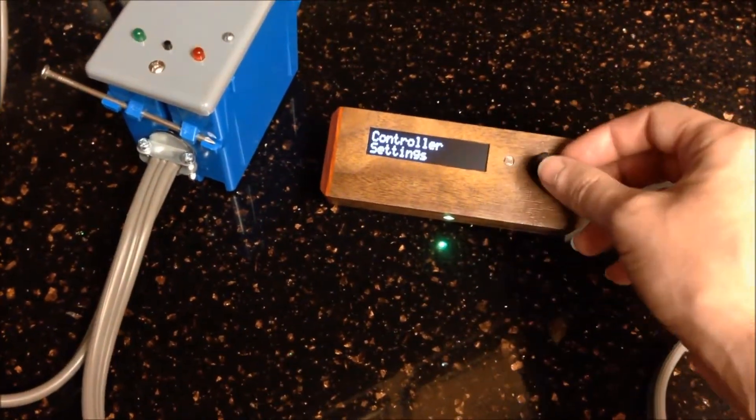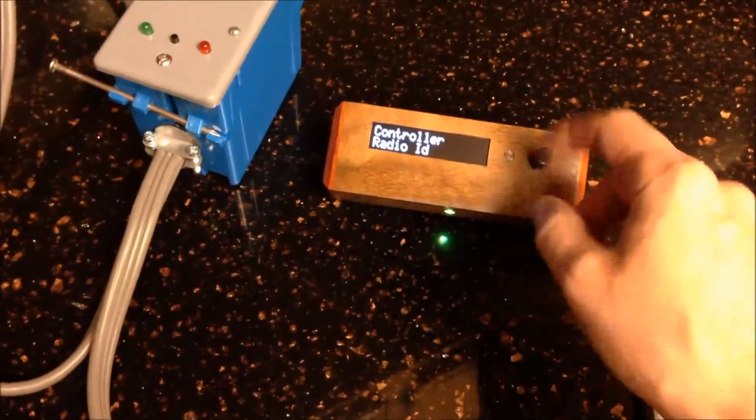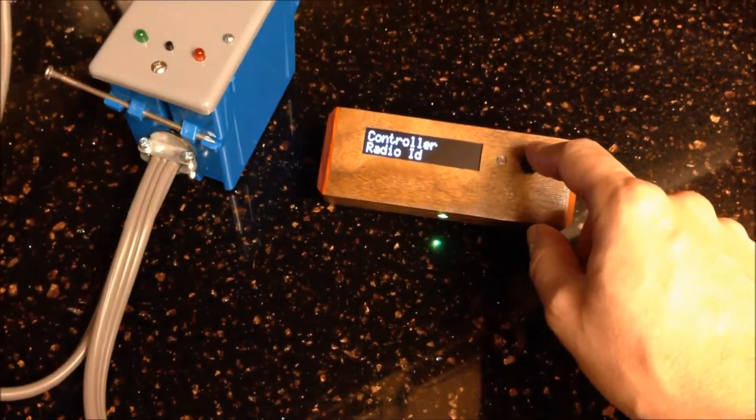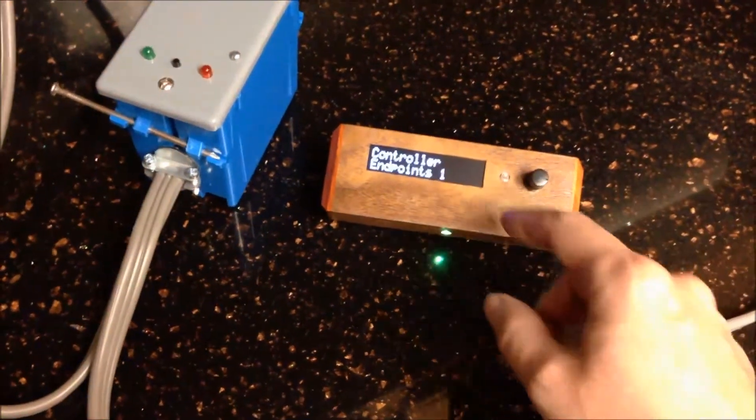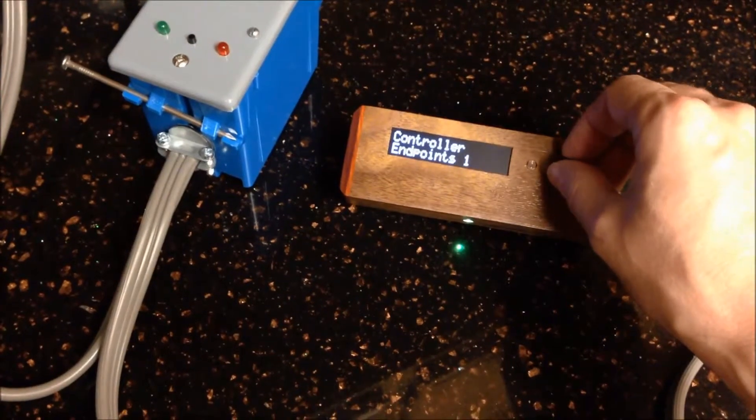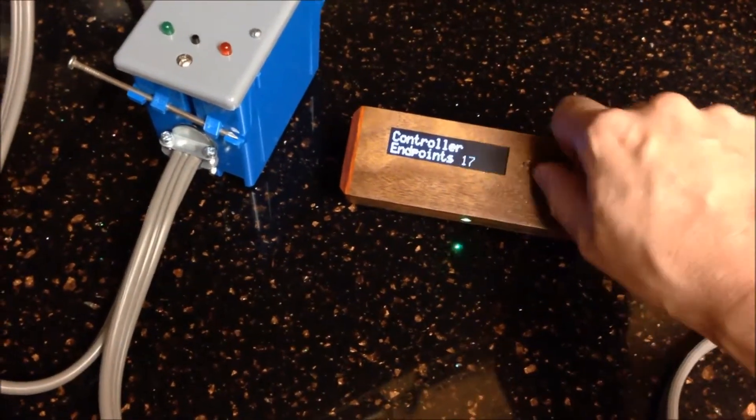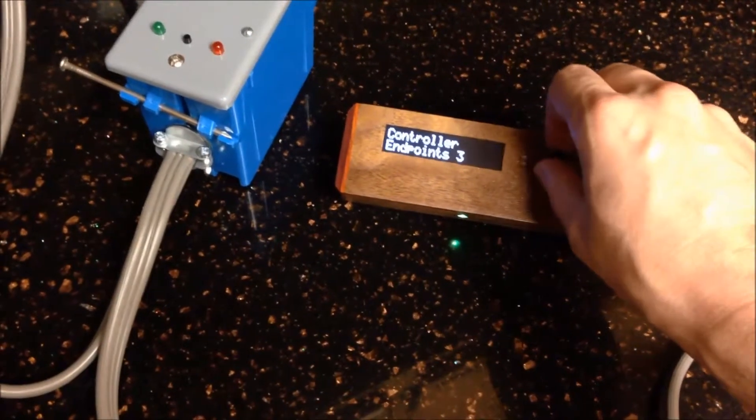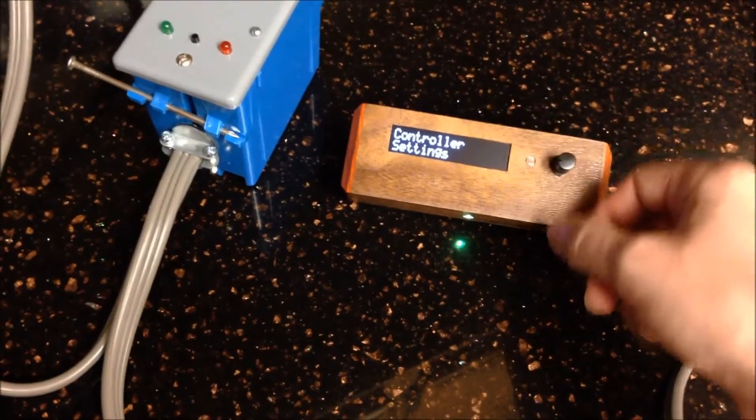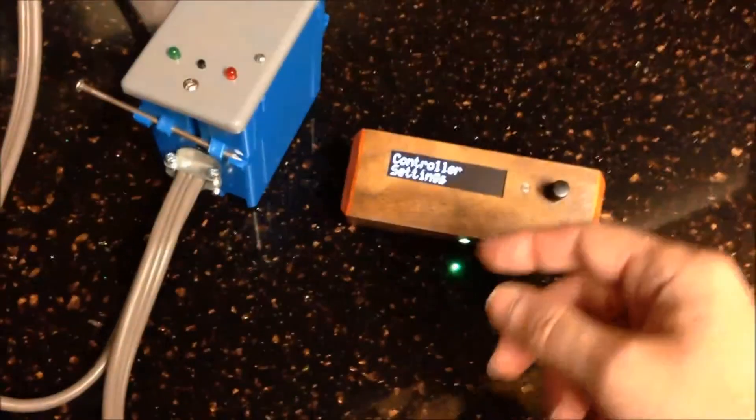In the controller settings you can edit the ID number for the controller just like you did before, and you can also edit the number of endpoints. You can change this to two or three or go all the way up to 20. I'll just put it on two and click there and then you're done with the controller settings and it takes you to the top.